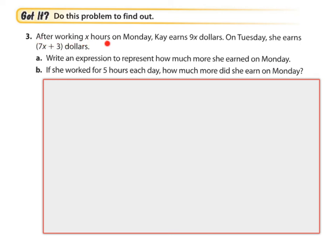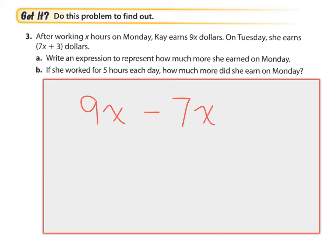After working x hours on Monday, Kay earns $9 per hour — that's 9x dollars. On Tuesday, she earns 7x plus $3. Write an expression to represent how much more she earned on Monday. That's what she earned on Monday, and that's what she earned on Tuesday — we have to find the difference. So we write it out as 9x minus 7x plus 3.